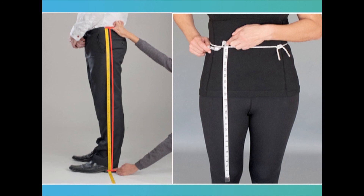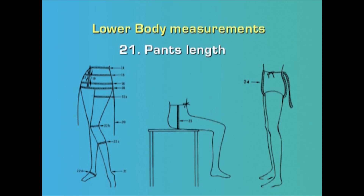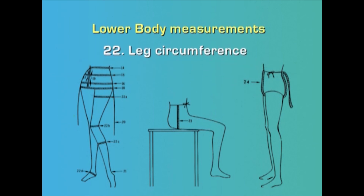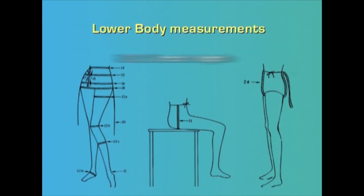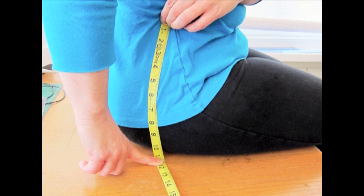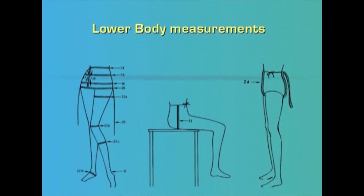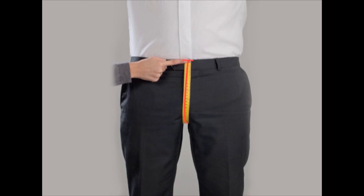Continue skirt length measurement at center back, right side, and left side; subtract the number of inches the skirt is to be worn from the floor and add hem allowances as needed. Pant length — measure from waistline along side seam to desired length for pants. Leg circumference — measure the fullest part of thigh, bent knee, calf, and instep. Crotch depth — sit erectly on a hard flat surface and measure along the curve on the side of the body from waistline tape to the flat surface. Crotch length — measure total crotch length from front waistline between the legs to back waistline.